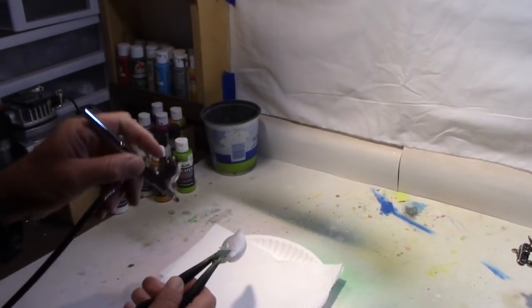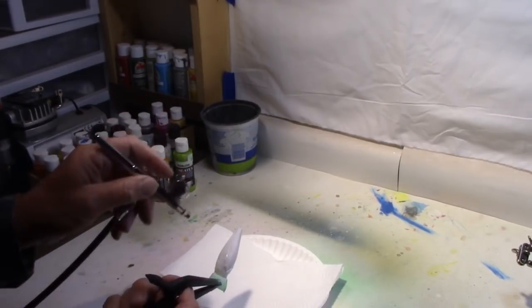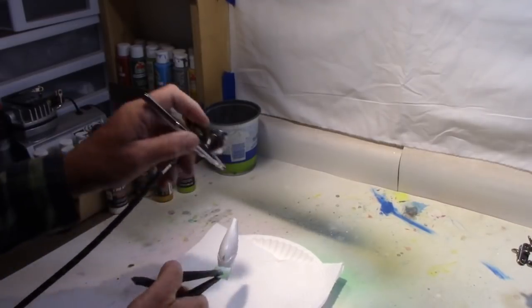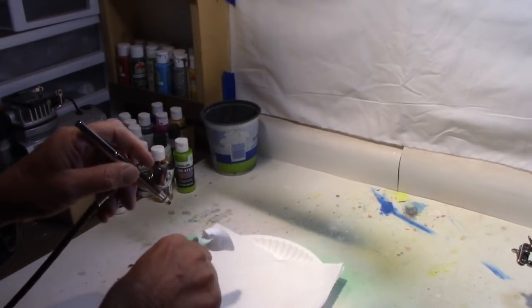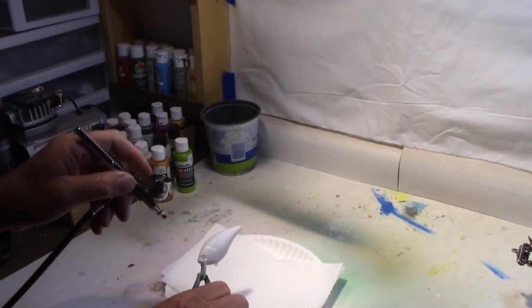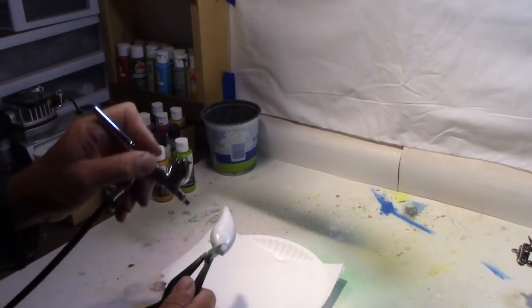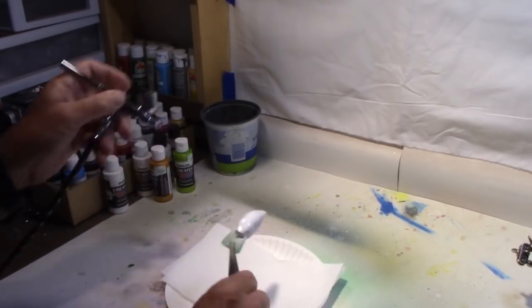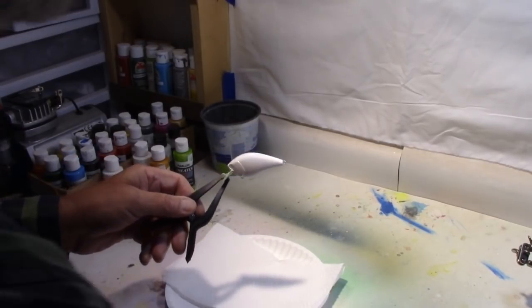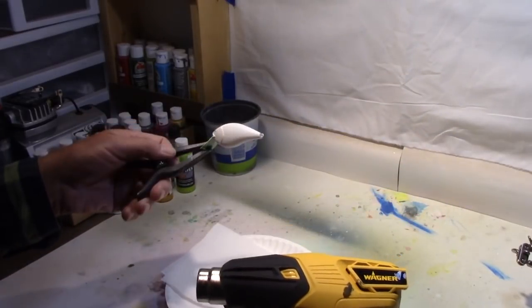And for a base coat, we're just going to use Createx Opaque White. Just give that good all-over cover. That should do it, give us enough cover on there. We're going to take the heat gun, put a heat set on that to dry it, and then we'll move on.